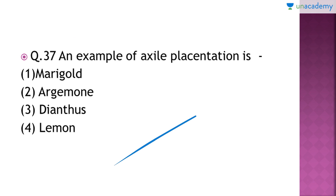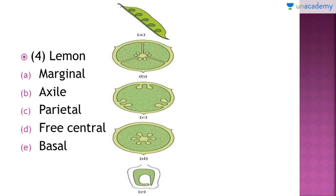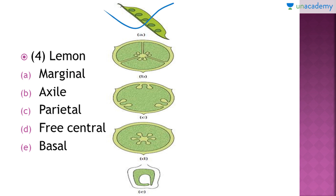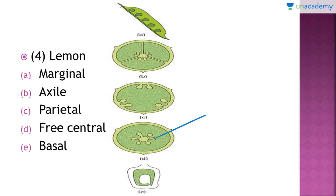Question number 37: an example of axile placentation is which of the following? It is a very easy question. The right answer is option number four, that is lemon. Here are the various placentations: marginal placentation is found in pea; axile placentation is seen in tomato and lemon; parietal placentation is found in mustard and argemone; free central placentation is seen in dianthus and primrose; and the most advanced type of placentation is found in sunflower and marigold. The examples I am telling you are very important — please do learn them, as they can be asked in NEET.